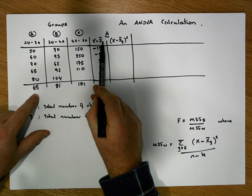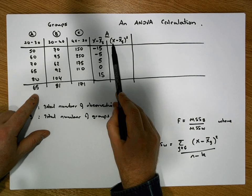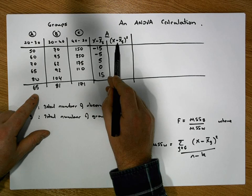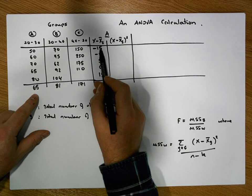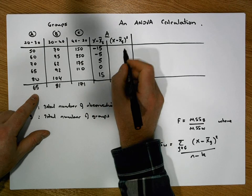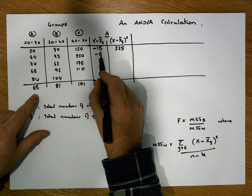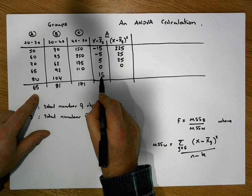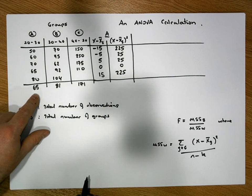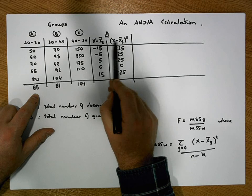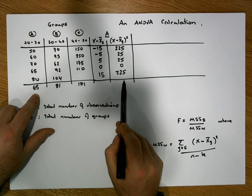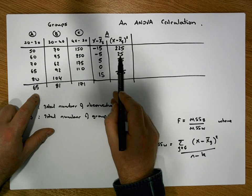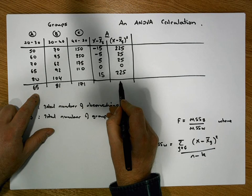We now know how far each observation is away from its own group mean. We square those to get the squared distances: minus 15 squared is 225, 5 squared is 25, 5 squared is 25, 0 squared is 0, and 15 squared is 225. The sum of these squared distances — the sum of squares for group A — is 225 plus 225 plus 25 plus 25 plus 0, giving a total of 500.